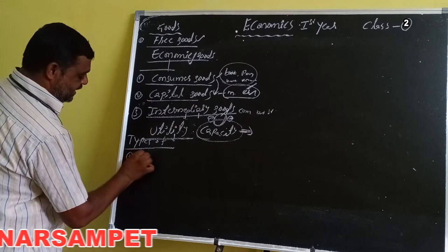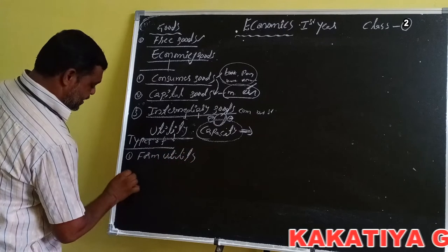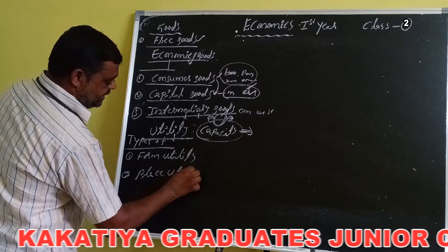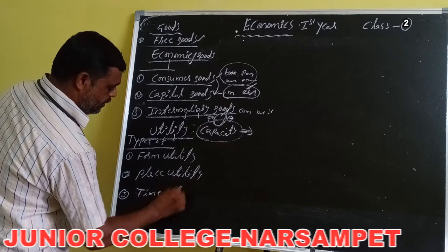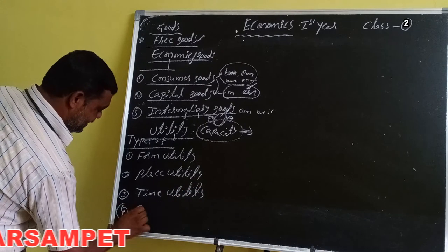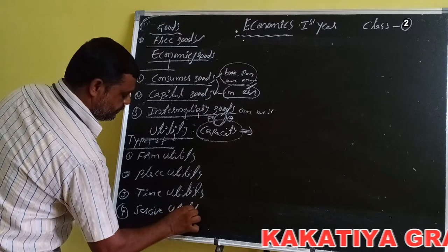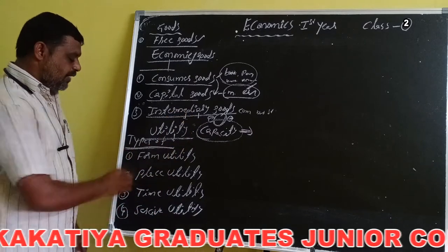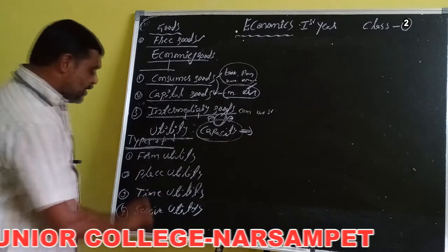The four types of utility are: first, form utility; second, place utility; third, time utility; and finally, service utility. Form utility means utility created by changing the shape, color, and size of a commodity.